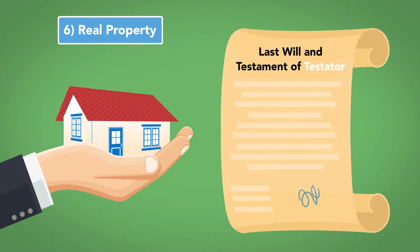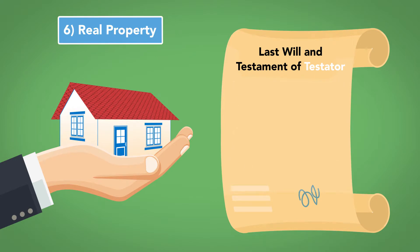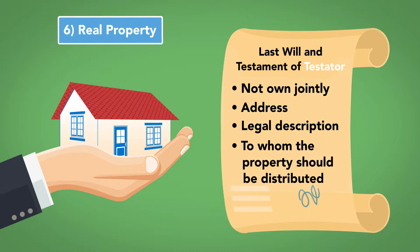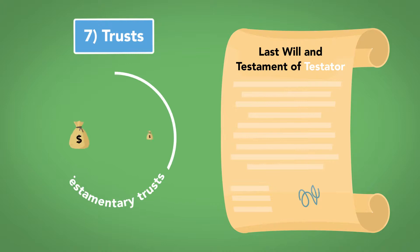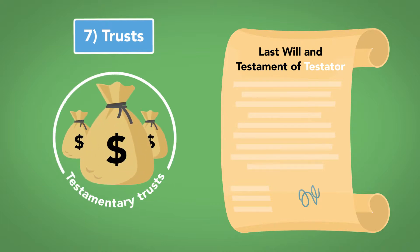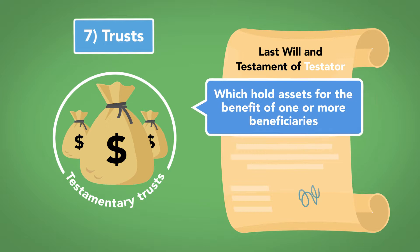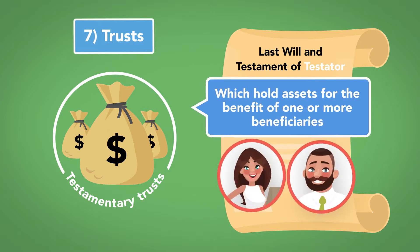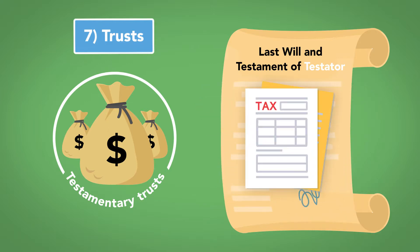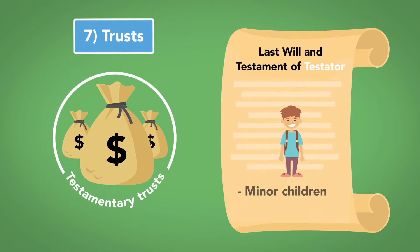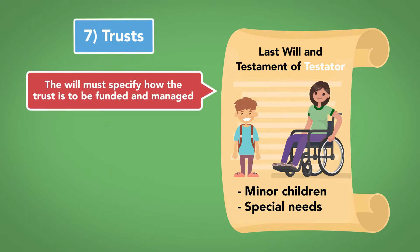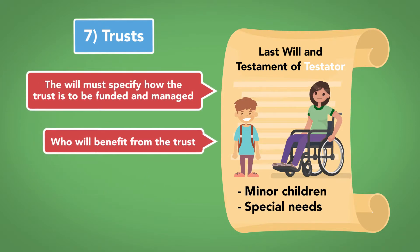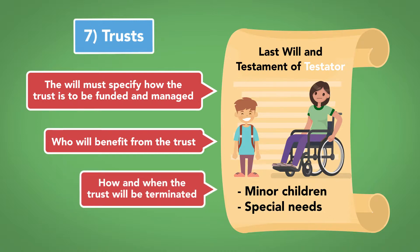Number 6: Real Property. The will may identify real property not owned jointly with another person, by address or legal description, and to whom the property should be distributed. Number 7: Trusts. A will may establish testamentary trusts, effective after the testator's death, which hold assets for the benefit of one or more beneficiaries. Some testamentary trusts are created for tax reasons, while others may be created for minor children or beneficiaries with special needs. The will must specify how the trust is to be funded and managed, who will benefit from the trust, and how and when the trust will be terminated.